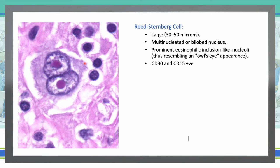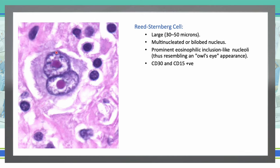Reed-Sternberg cells are large — about 30 to 50 microns — with multinucleated or bilobed nuclei. They have prominent eosinophilic inclusion-like nucleoli, so they resemble an owl eye appearance. They are CD30 and CD15 positive, and the presence of these cells is necessary for the diagnosis of Hodgkin's lymphoma.